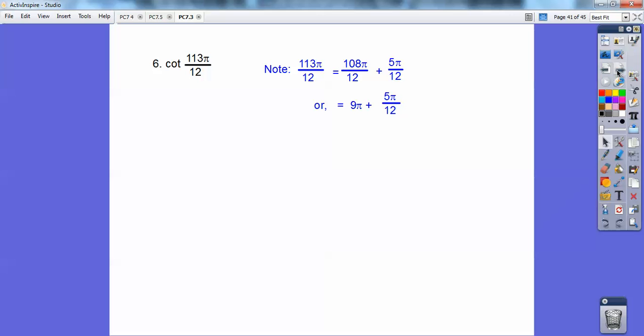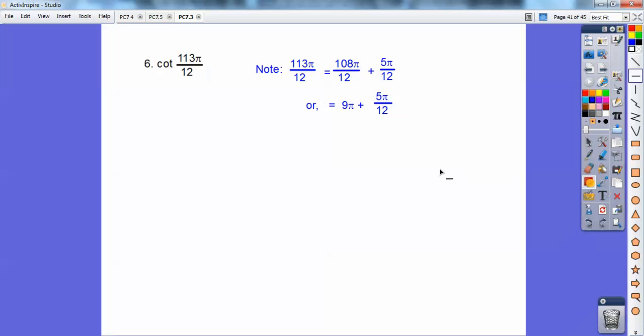Cotangent of 113 pi over 12. You need to recognize that 113 pi over 12 is the same as 108 pi over 12 plus 5 pi over 12. 108 pi over 12 is 9 pi. Well, 9 pi is the same as pi. Let me show you here. This is 0, this is 1 pi, 2 pi, 3 pi, 4 pi, this is all my odd pi, so here's 9 pi right there. So 5 pi over 12 is going to be down here in quadrant 3. Notice cotangent is positive in quadrant 3, so I'm going to just take the cotangent of positive 5 pi over 12.